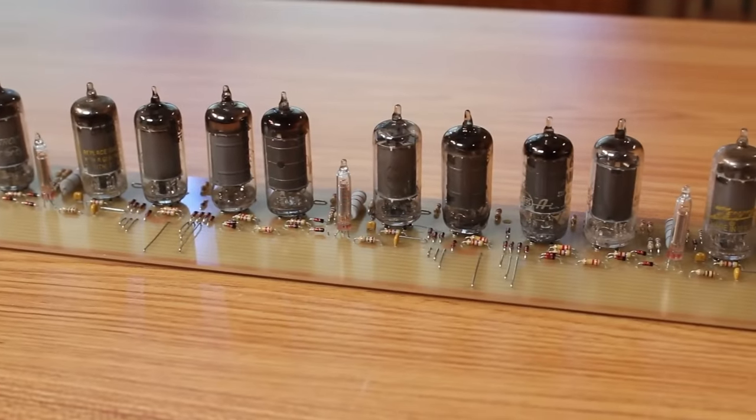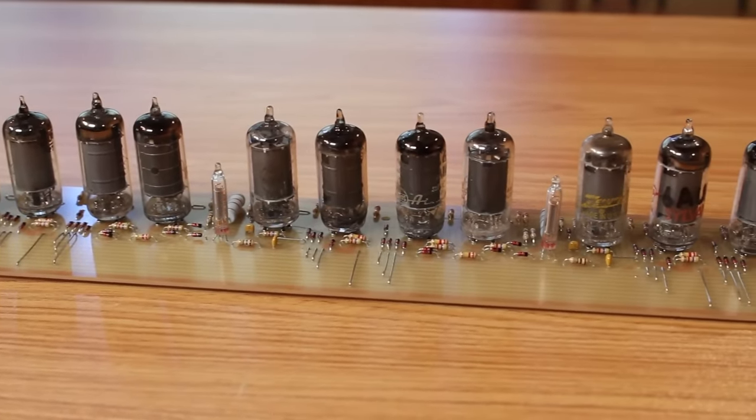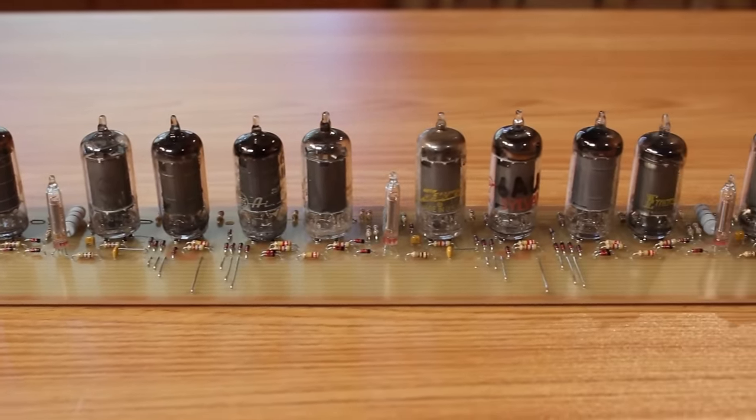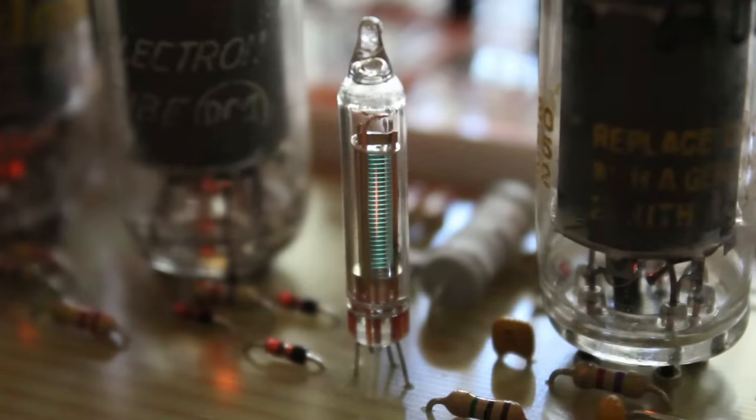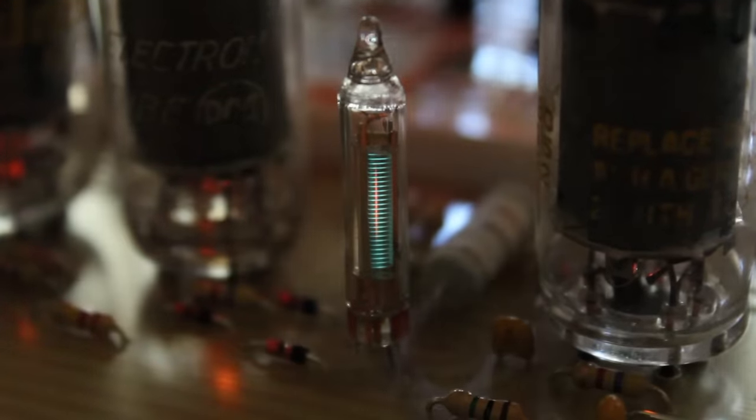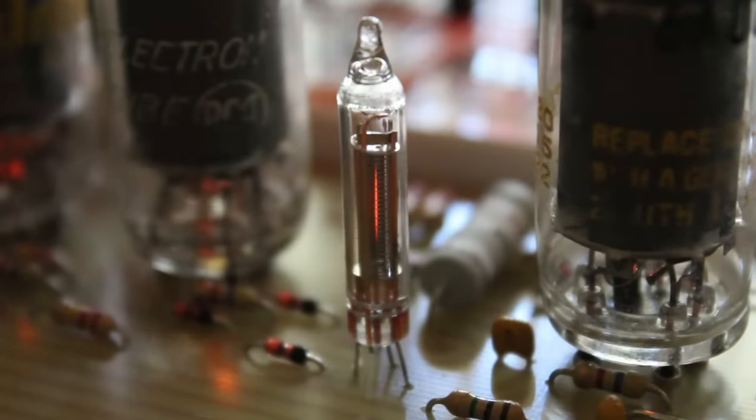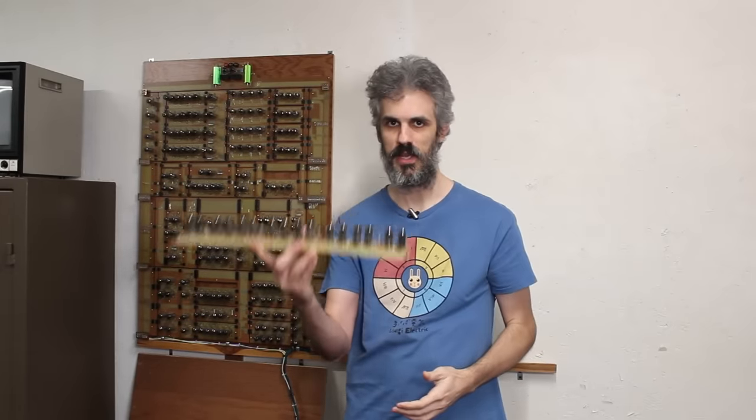The memory we have to build completely separately. We actually built this guy right here, which is four bits of vacuum tube memory. The actual memory cell is just one 6AU6 and one VFD. They just create a little SR flip-flop. There's four VFDs, so that's just a nibble of memory.